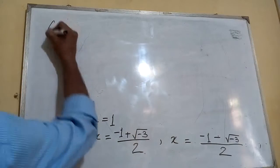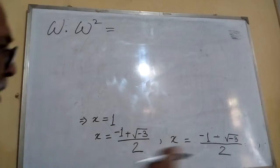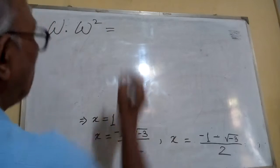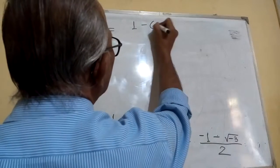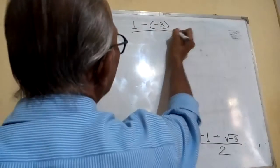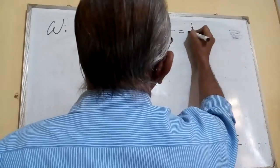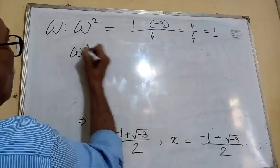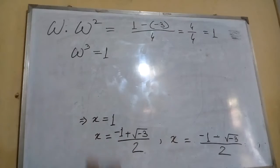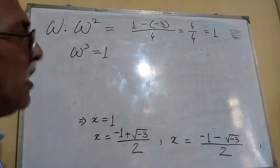Now see: omega into omega square equals to this one into this one. If we compute it as a difference of squares, it becomes one minus minus three, by four, that is four by four, which equals one. So we are getting omega cube equals to one. And that is our assumption also — omega is the cube root of one, so omega cube gives us one.